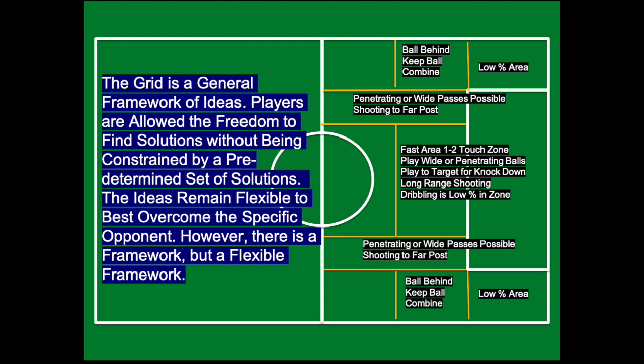The half spaces are labeled for penetrating balls, passes out wide, or even shooting to the far post. The half space area is located in those two spaces outside of the central area, on top of the box. If you look at someone like Messi, they love to get balls in the half spaces because they can hook it to the far post and score a lot of goals from there. The half spaces are great because you can still slide penetrating balls through into the middle of the box for a striker to finish, or play the ball out wide.